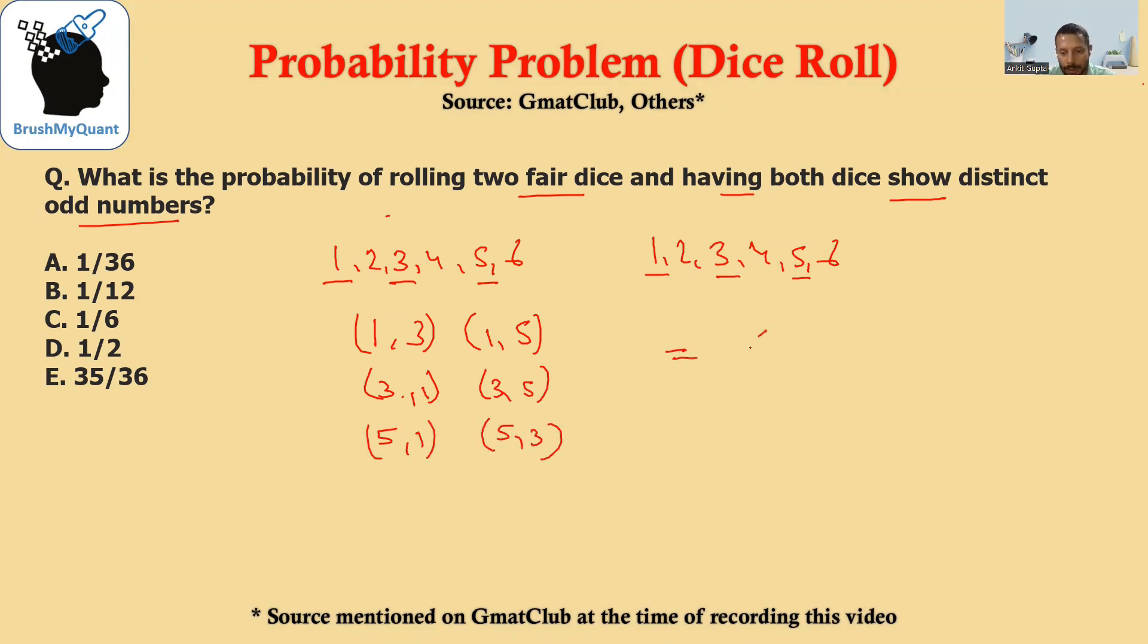So overall, we'll have six possible cases divided by the total number of cases, which is six multiplied by six in this case. So the answer will be one by six, or option number C.